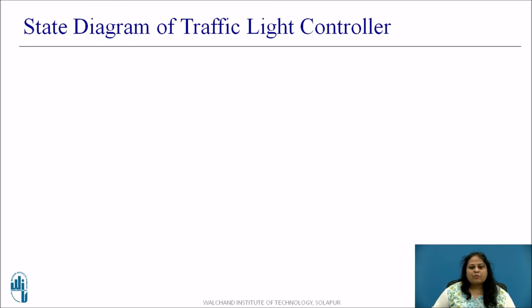Let us now represent the working of this traffic light controller into a state diagram. For timing purpose the sequential circuit is driven by a clock with a 10 second period. Here following notation is used. S0 is the initial state and GA, RB in a state means that GA equal to RB equal to 1 and all other output variables are 0.